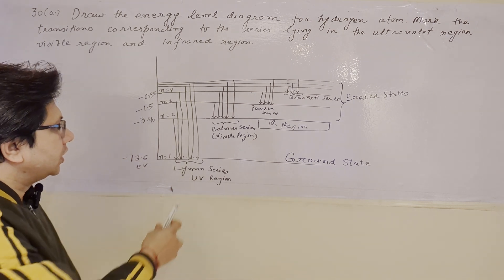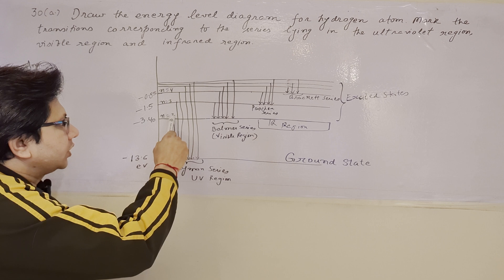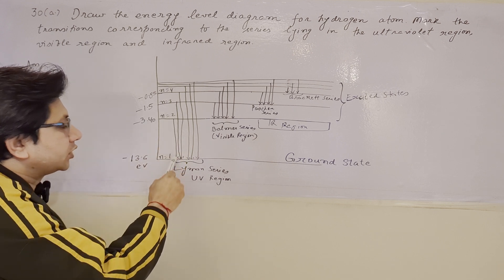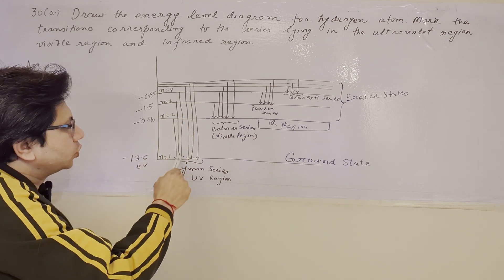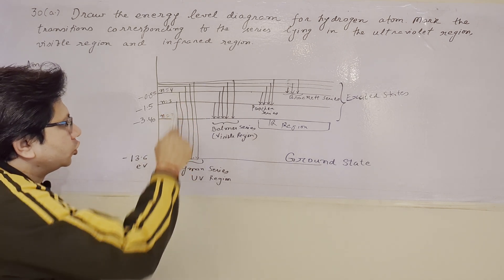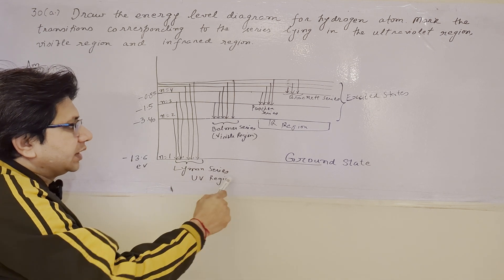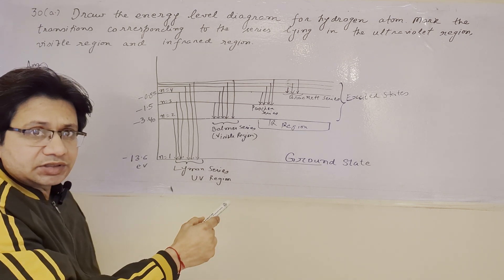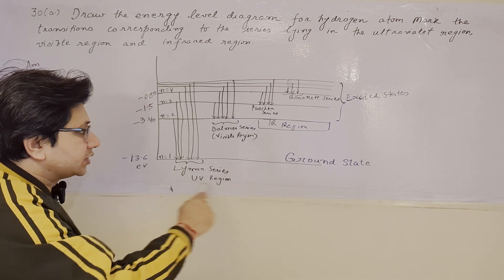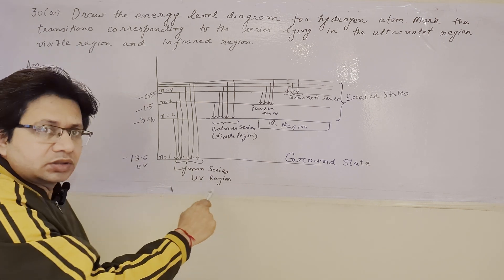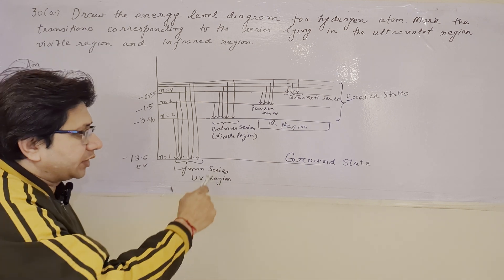When there is a transition from n equals to 2 to n equals to 1, or from n equals to 3 to 1, 4 to 1, and so on, we get the Lyman series. The Lyman series corresponds to the UV region spectrum.